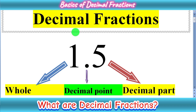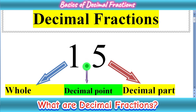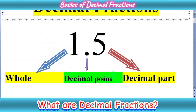The basic concept of decimal fractions — let's start. As you can see here, a number 1.5. Maybe you have seen this number before. This is a decimal number, or decimal form of a fraction. Here you can see a point that is called the decimal point. This decimal point separates the whole number and the decimal part. On the left side of the decimal point you can see all the whole numbers, and on the right side you can see the decimal part, meaning the fractional part.